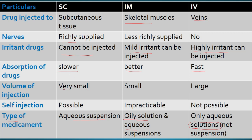Volume of injection: in case of subcutaneous route, we can inject only a very small volume — a maximum of 1 ml. In case of IM, we can go up to 10 ml, though normally we administer around 3 ml. In case of intravenous route, we can administer large volumes — for example, Ringer's lactate or dextrose 5% are administered through IV route, and they are almost 500 ml.